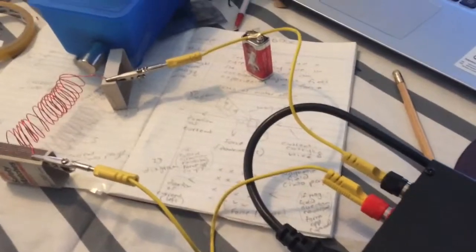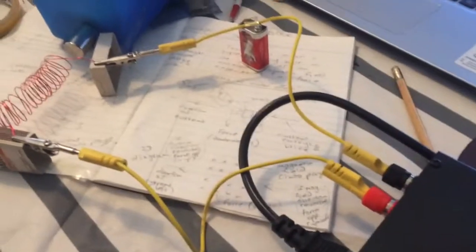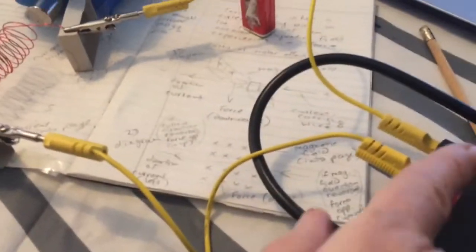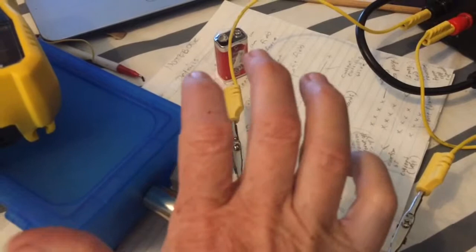Now on this simple setup, I've got current going through a coiled wire. The current is traveling from here, going through the coil and wrapping around this way, so that if I follow the current in this direction